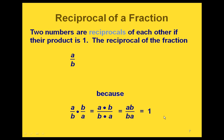Another term we're going to use quite a bit is the reciprocal of a fraction or a number. Two numbers are reciprocals of each other if their product is 1 — if you can multiply them together and get 1. The reciprocal of the fraction a over b is b over a; notice the a and b are just switched. If we multiply a over b times b over a, we get a times b on top and b times a on the bottom, everything cancels, and we're left with 1.